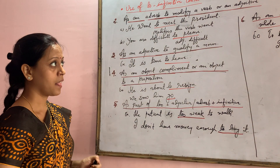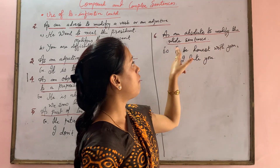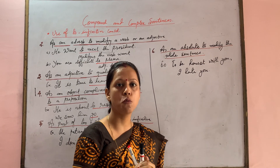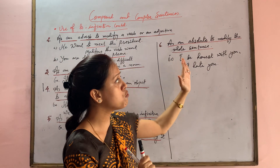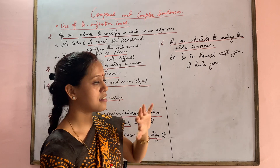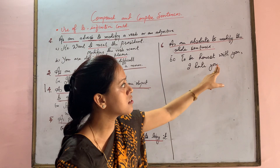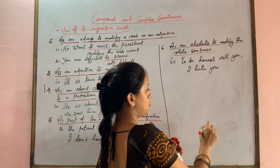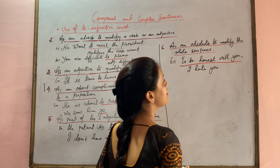Finally, the to-infinitive can be used as an absolute to modify the whole sentence. It gives an explanation for the complete change in meaning of the sentence. For example: 'To be honest with you, I hate you.' Here, 'to be honest with you' modifies the entire sentence.